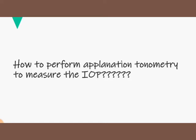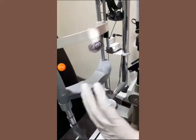Goldman applanation tonometry is the gold standard method to measure the intraocular pressure of the eye. Previously, the Schiötz tonometer, which is an indentation tonometer, was used, but it was a very old method and had many errors, including mechanical errors. In Goldman applanation tonometry, we don't need to indent the probe of the tonometer — we just need to touch and observe the mires.